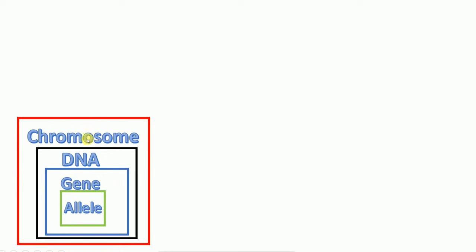Think of it this way: in the nucleus we have chromosomes. A chromosome is DNA plus specific proteins, super-condensed. Within the DNA, a specific segment or section is the gene. And one gene in a pair is called an allele. Think of it as nested boxes: chromosome is the largest, then DNA, then gene, and the smallest is the allele.